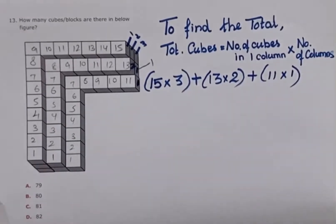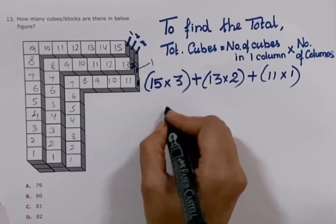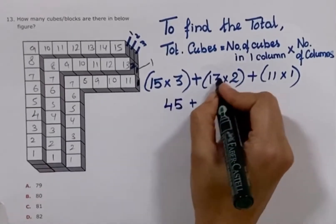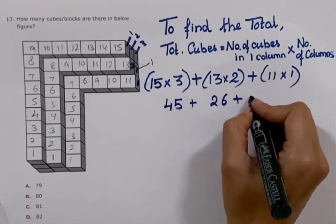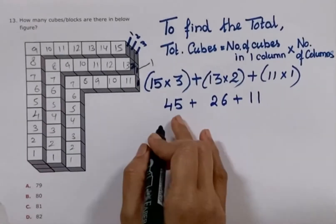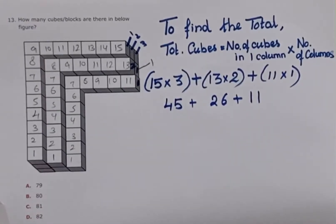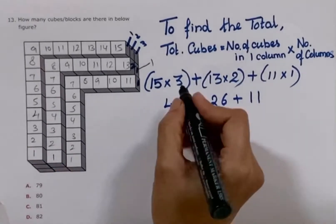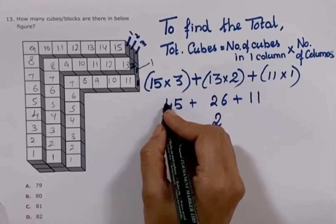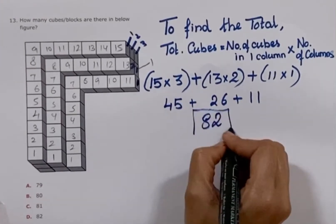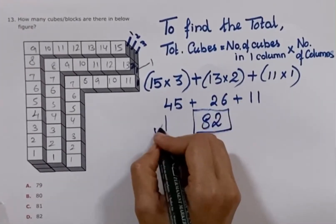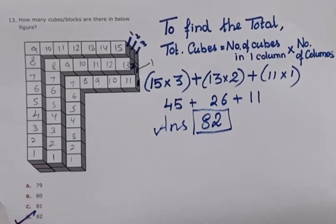Sum these up to get the total cubes in this figure. 15 into 3 is 45, then 13 into 2 is 26, plus 11. The summation gives you 82. So the answer is option D — 82 cubes in this figure.